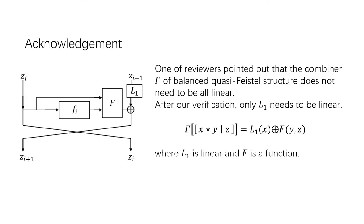Finally, we would like to thank the reviewers for their constructive comments during the review process. One of the reviewers pointed out that the combiner gamma of the balanced quasi-Feistel structure does not need to be fully linear. After our verification, only L1 needs to be linear. Specifically, if the combiner of the quasi-Feistel structure is gamma equals L1(x) XOR f(y, z), where L1 is linear and f is a function, then there exists a quantum CPA distinguisher against the three-round balanced quasi-Feistel structure, and a quantum CCA distinguisher against the four-round balanced quasi-Feistel structure.